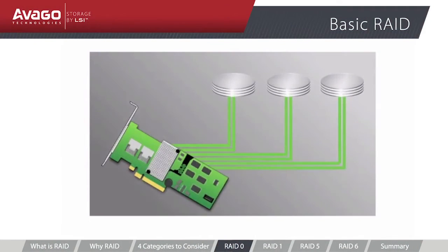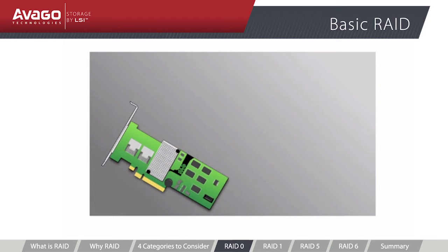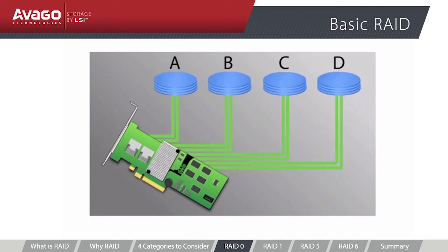RAID Zero, also known as Striping, distributes data across multiple disks to improve speed. RAID Zero is somewhat of a misnomer in that it is non-redundant — the R in RAID stands for redundant. Since data is distributed across two or more drives without any element of redundancy, failure of one of those drives will result in data loss. In an overly simplified RAID Zero configuration with four physical disks A through D, the RAID controller will write the data concurrently to all drives for improved performance.